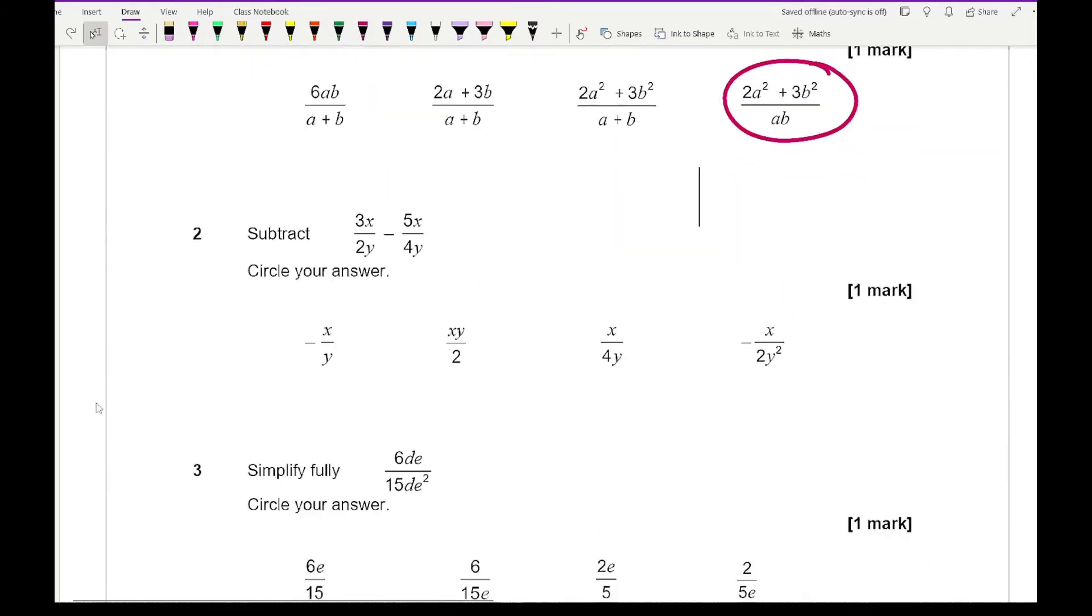For question two it says subtract 3X over 2Y minus 5X over 4Y. What I'm going to do is multiply this first fraction by 2 so it gives me 6X over 4Y and then minus 5X over 4Y. Then combine the numerators together which gives X over 4Y, which is our third option.